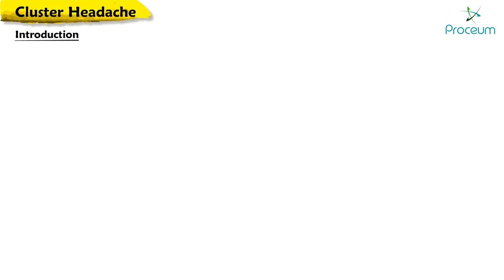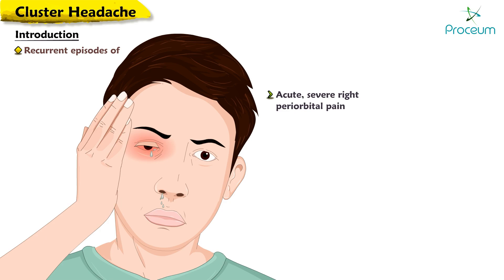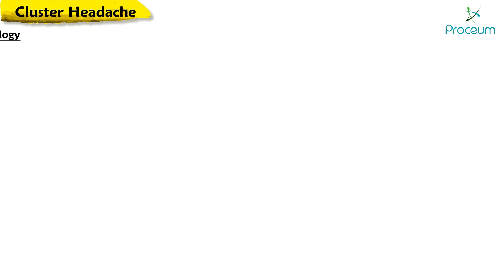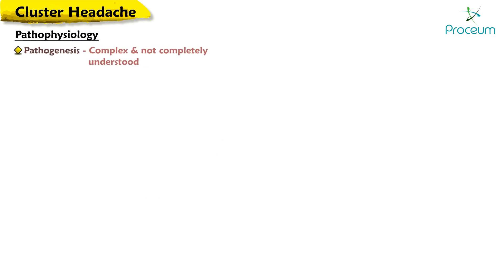Cluster headache: recurrent episodes of acute severe right paraorbital pain accompanied by autonomic manifestations like ipsilateral miosis and lacrimation without vision changes are suggestive of cluster headaches. The pathogenesis of cluster headache is complex and not completely understood.